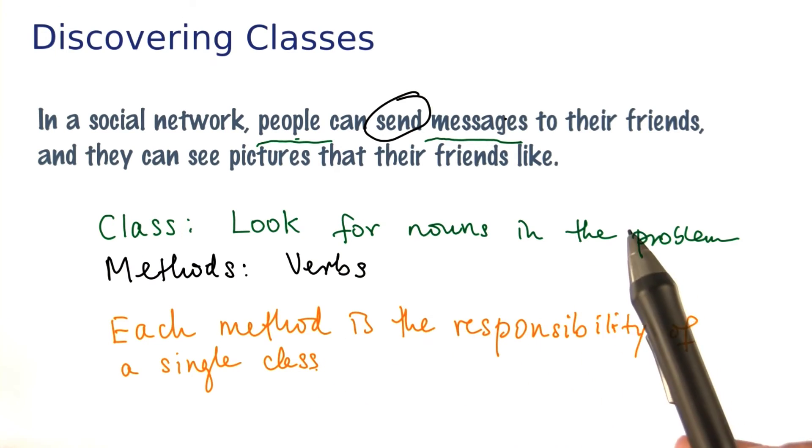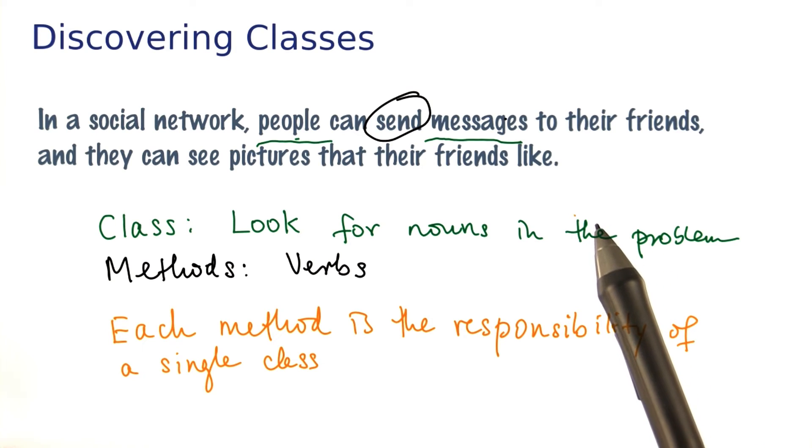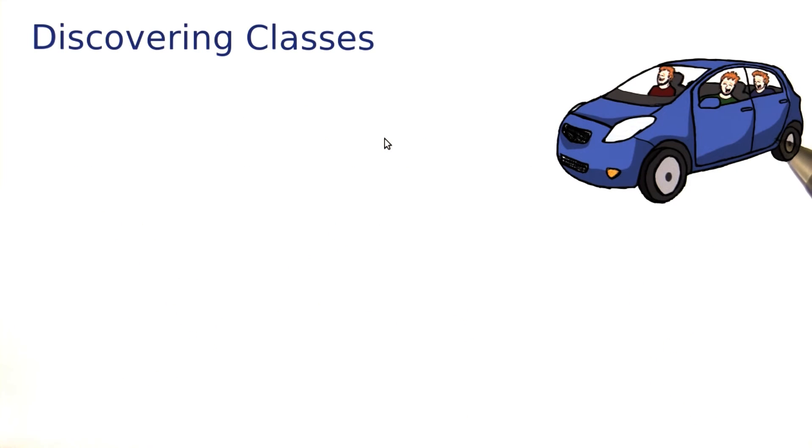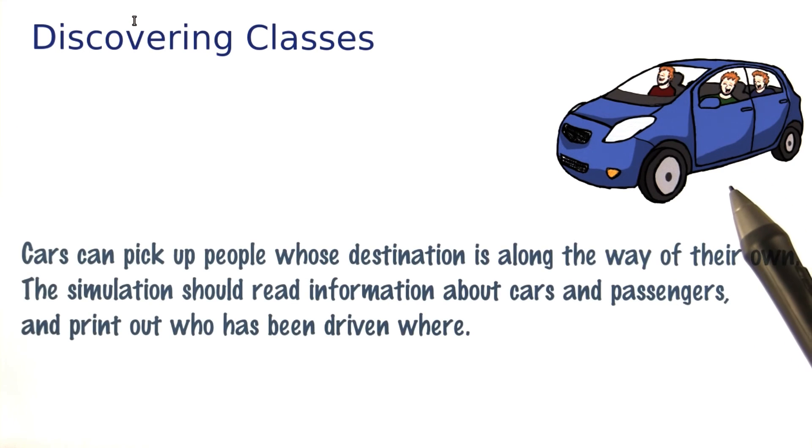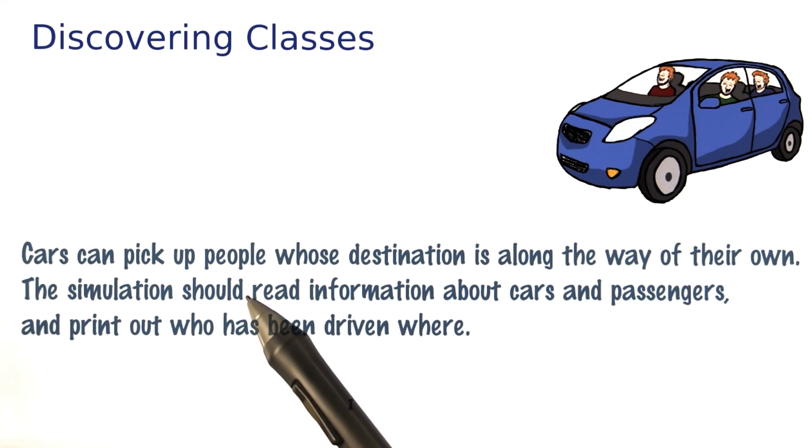In this lesson, we'll be implementing a fairly complex program. And we'll start out by discovering the classes that we need. The program that we want to develop deals with car sharing. So we know car sharing is great. It means less waste, less environmental damage. People travel together when they can. So we want to write an application that simulates car sharing so that we can learn how to make it better. Here is a problem description.